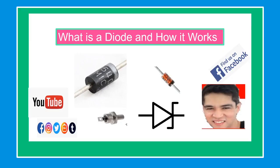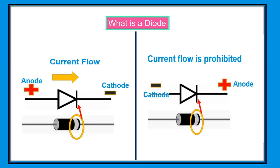Our topic for today is what is a diode and how it works. The existence of the electronics industry would have been impossible without a diode. It is a plain semiconductor device that finds its applications all over the world of electronics. A diode is a semiconductor device that essentially acts as a one-way switch for current. It allows current flow in one direction only and restricts current flow in the opposite direction.